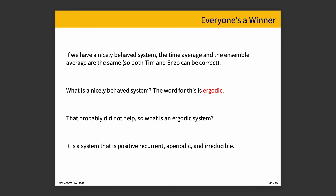Ergodic has a three-part definition: positive recurrent, aperiodic, irreducible. Those three words are not necessarily any more transparent — aperiodic maybe — but we have to investigate each of those things to understand it a little bit better.